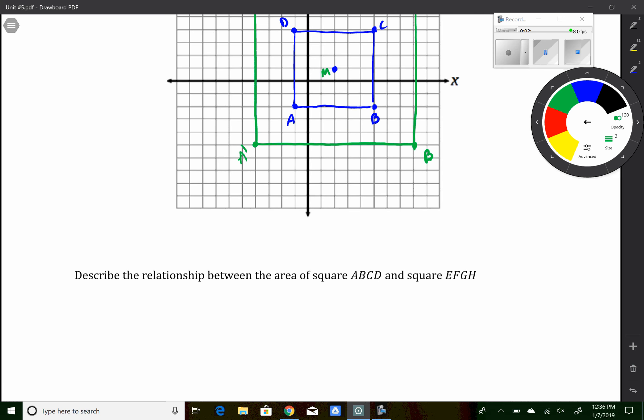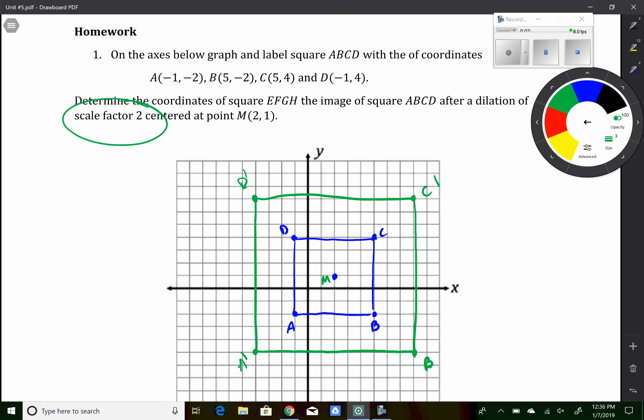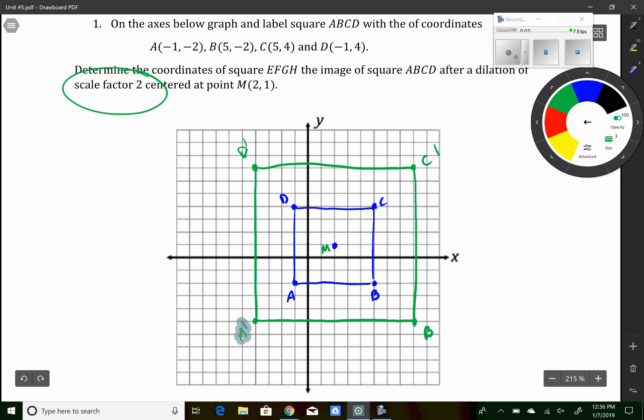So it says, describe the relationship between the area of square ABCD and square EFGH. Oh, actually, I labeled these wrong. So this should be E, EFGH. Good thing we noticed that.